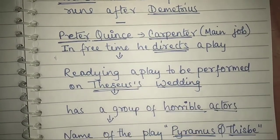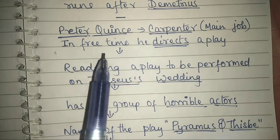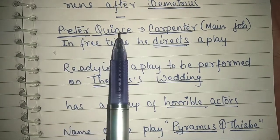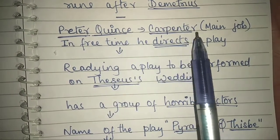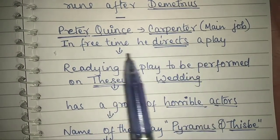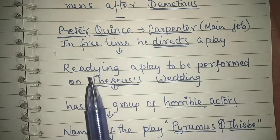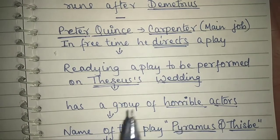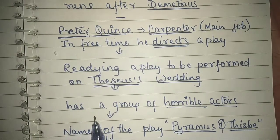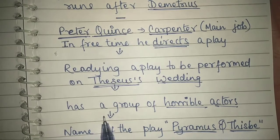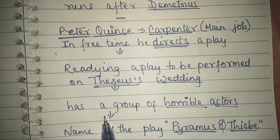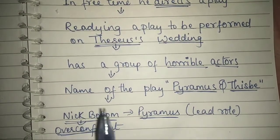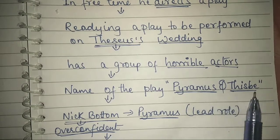On the other hand, for the wedding of Duke and Queen, Peter Quince — a carpenter by profession — decided to direct a play. He was preparing a play for Theseus's wedding and had a group of actors, but they were not good. They were amateur actors, unrefined, and their acting was horrible. The name of the play they decided to perform was Pyramus and Thisbe.